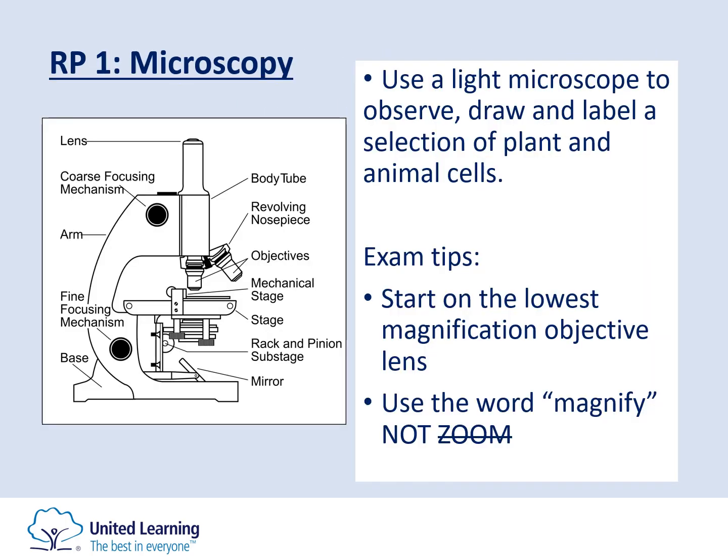The first required practical you would have had in year 10 was your microscopy practical. The purpose of this was to use the light microscope to observe, draw and label a selection of plant and animal cells. For the plant cell we looked at onion cells, and for the animal cells we looked at cheek cells. To do this you need to be familiar with the microscope parts. At the very top, the lens, also known as the eyepiece, has a magnification of 10.